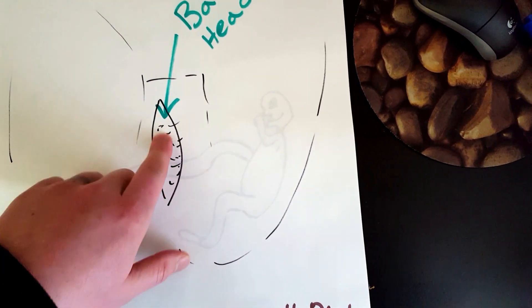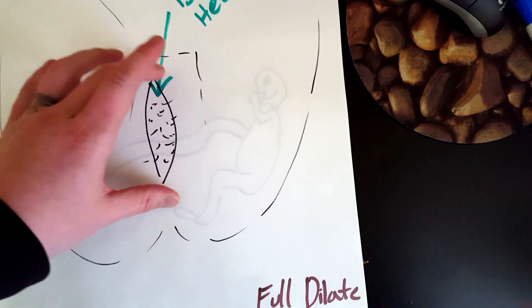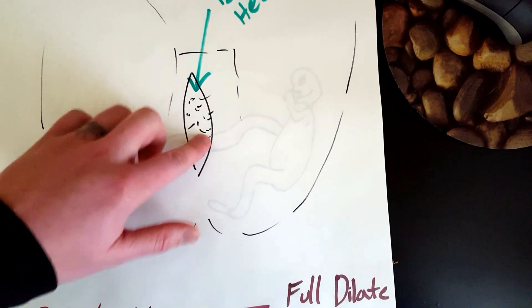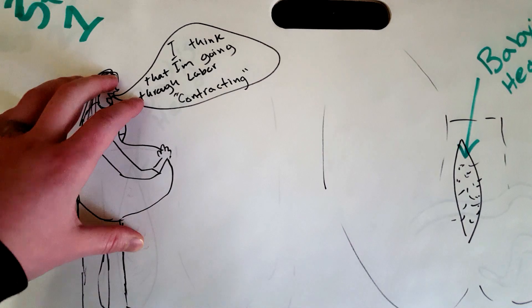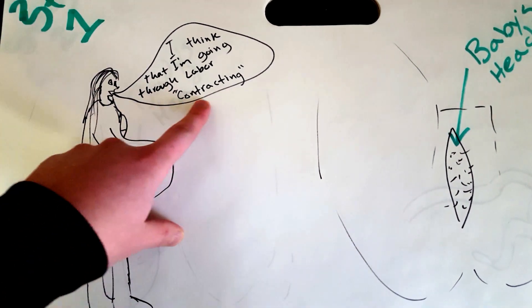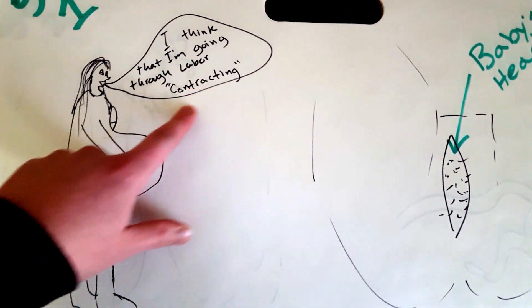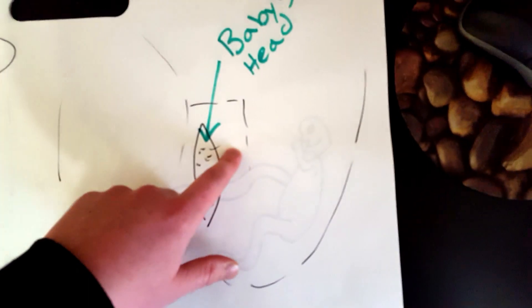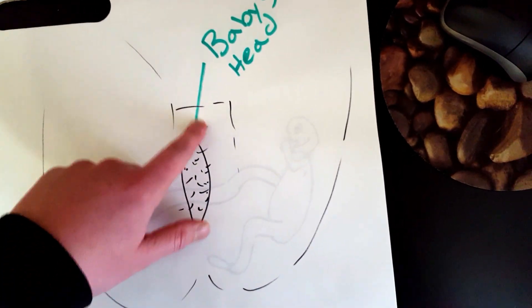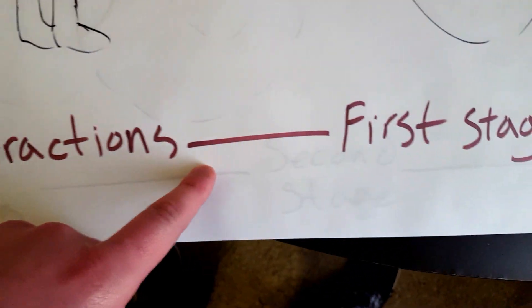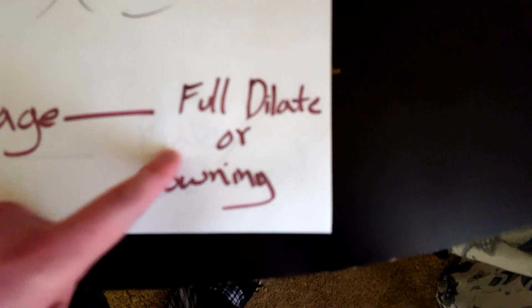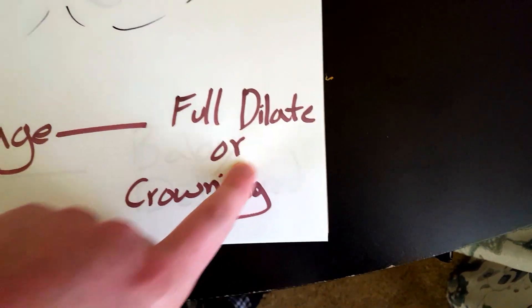The baby's crowning right now, in case that wasn't clear. So from when the mother is actually legitimately contracting to when the baby is crowning—that is the first stage. Contractions start to either full dilation or crowning, however you want to remember it. That's the first stage of the labor process.